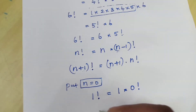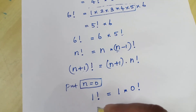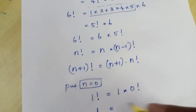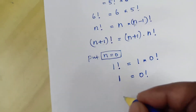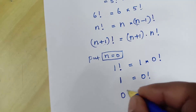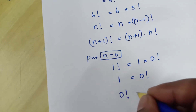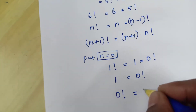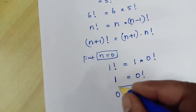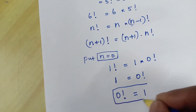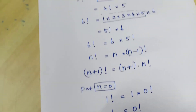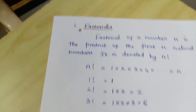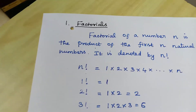So 1 factorial value is 1, which is equal to 1 × 0 factorial. Therefore, 0 factorial is defined as 1. This is the definition for the factorial of a number.